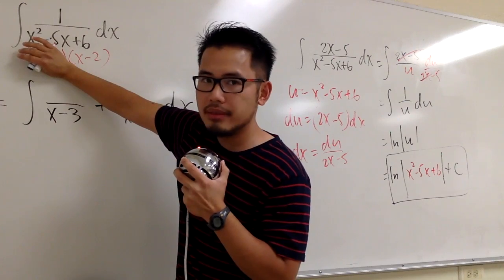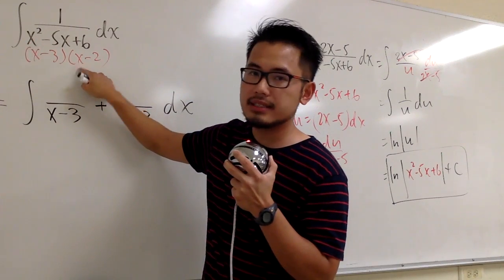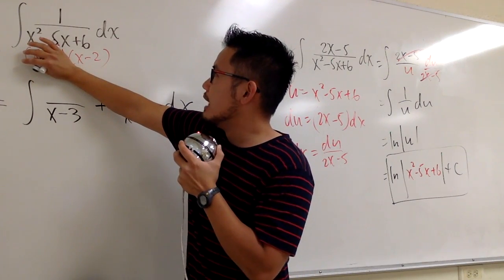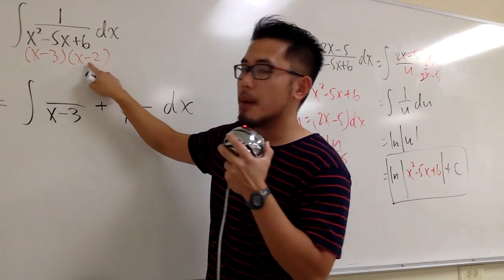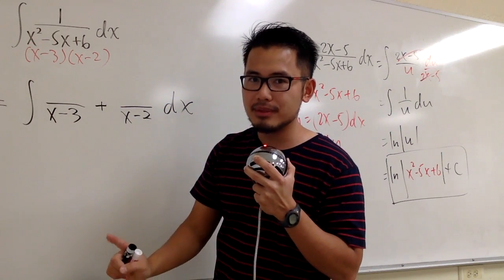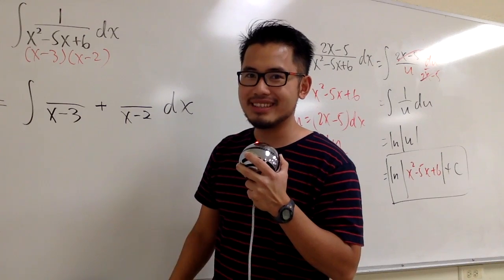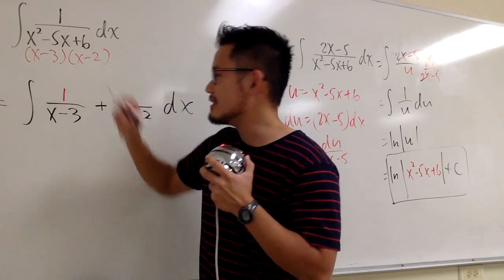Well, on the top we just have 1, we have to plug in 3 into this x. So let's do this in our head. On the top we have 1 over 3 minus 2, which is 1 on the bottom. 1 over 1 is what? It's 1. So then, this number right here is 1.